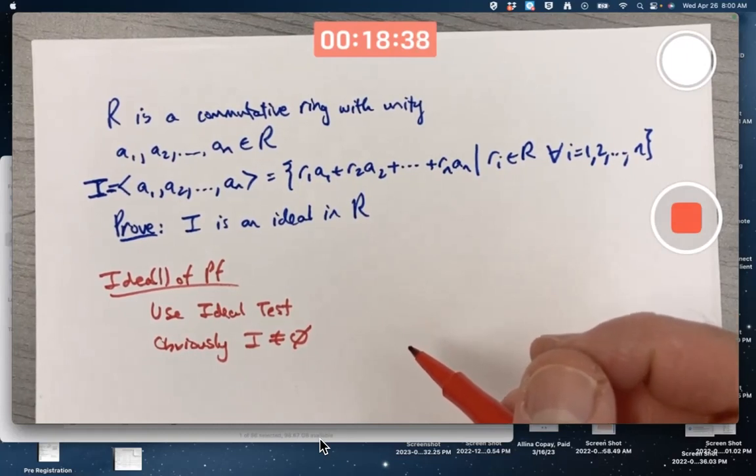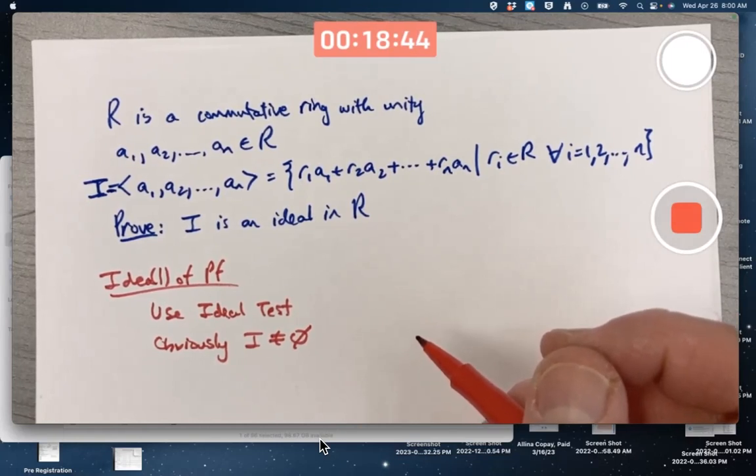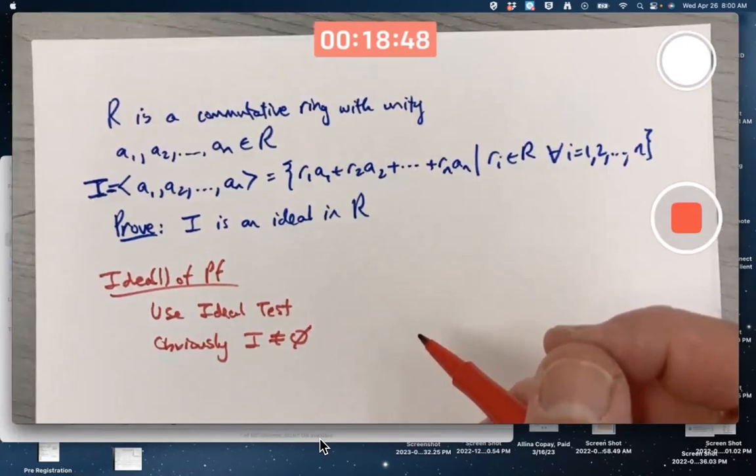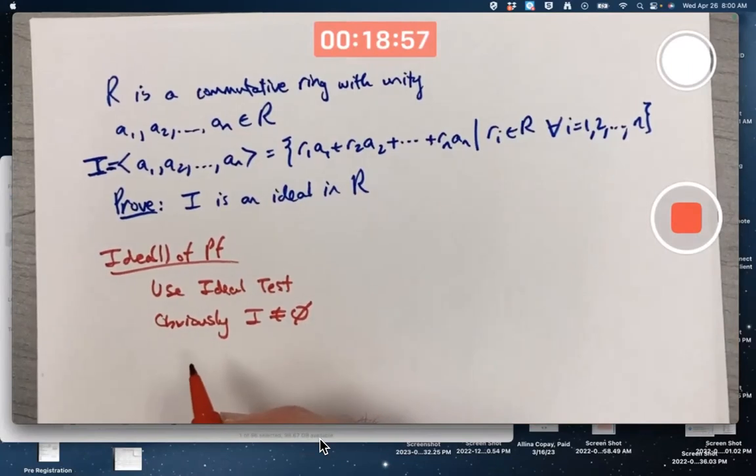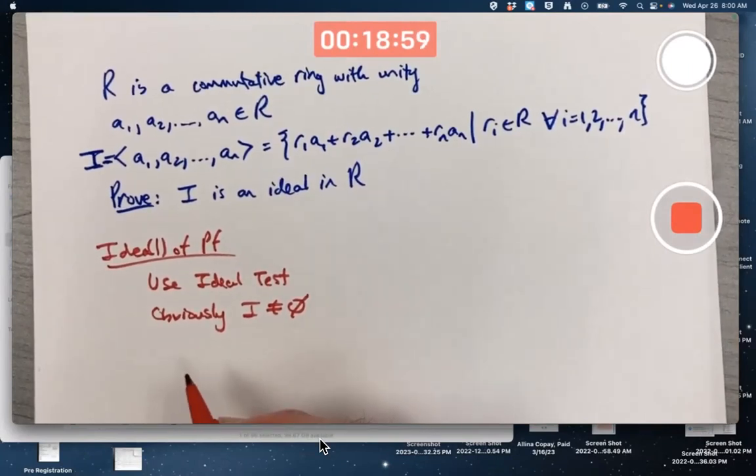Is it closed under subtraction? If it is, that would verify that it's a subgroup of R, if you only focus on the group structure, which is necessary to be a subring. And is it superclosed under multiplication, more than just for a subring, but an ideal. So for closure under subtraction, and again, I'm not going to write sentences. That's just why this is the idea of the proof.